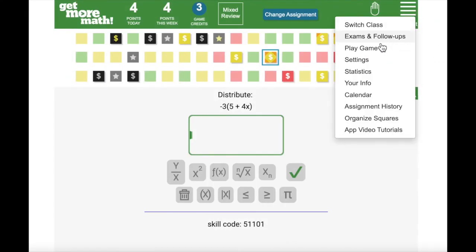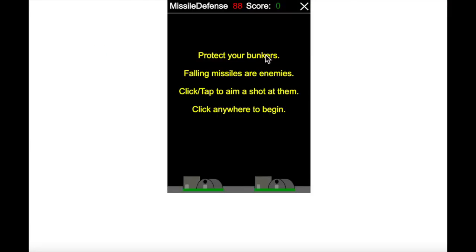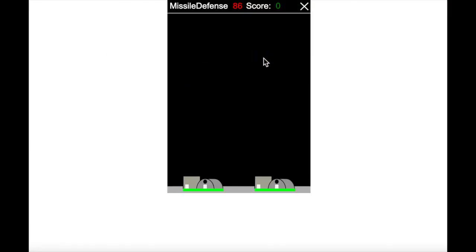This is also where you'll go to spend your game credits. Each credit earns 90 seconds of game time. Your teacher gets to decide both what games are available and how many points you need in order to earn a game credit. Beware, when you log out, Get More Math will only save up to two game credits, so it's a good idea to use them as you earn them.